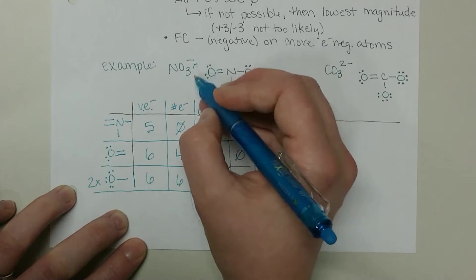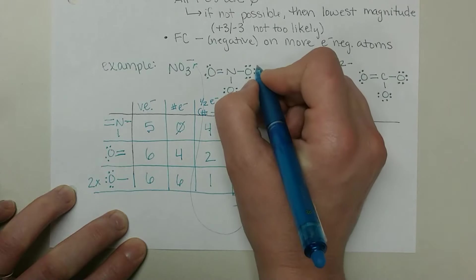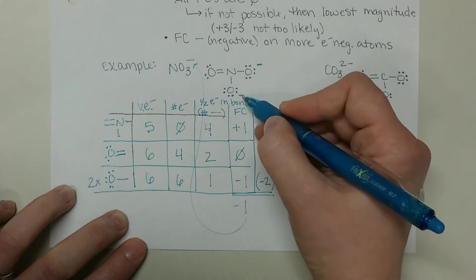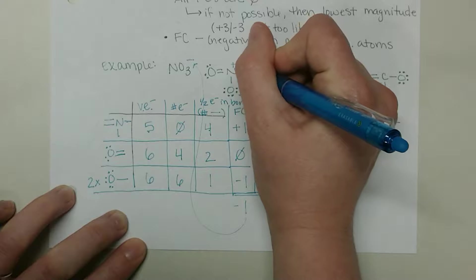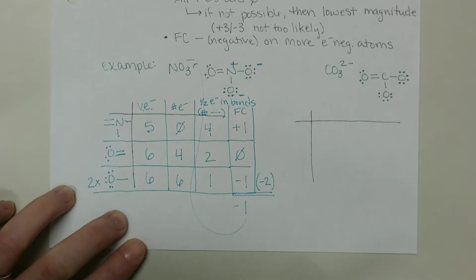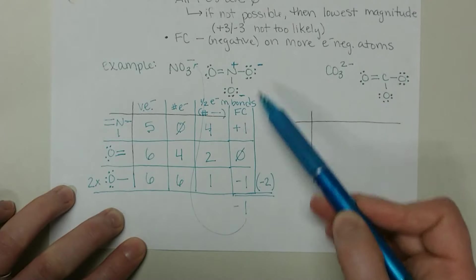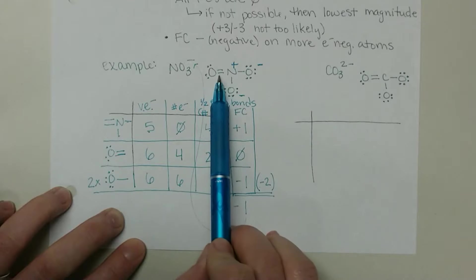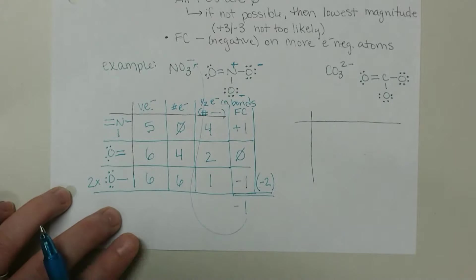To complete our Lewis structure here with our formal charges, we just stick our charge on that atom. The oxygens that are single bonded have a negative formal charge. Nitrogen has a positive formal charge. This now becomes our final Lewis structure, not accounting for resonance. Remember, we would draw the three resonance structures then with our double bond switching around to those other oxygens.